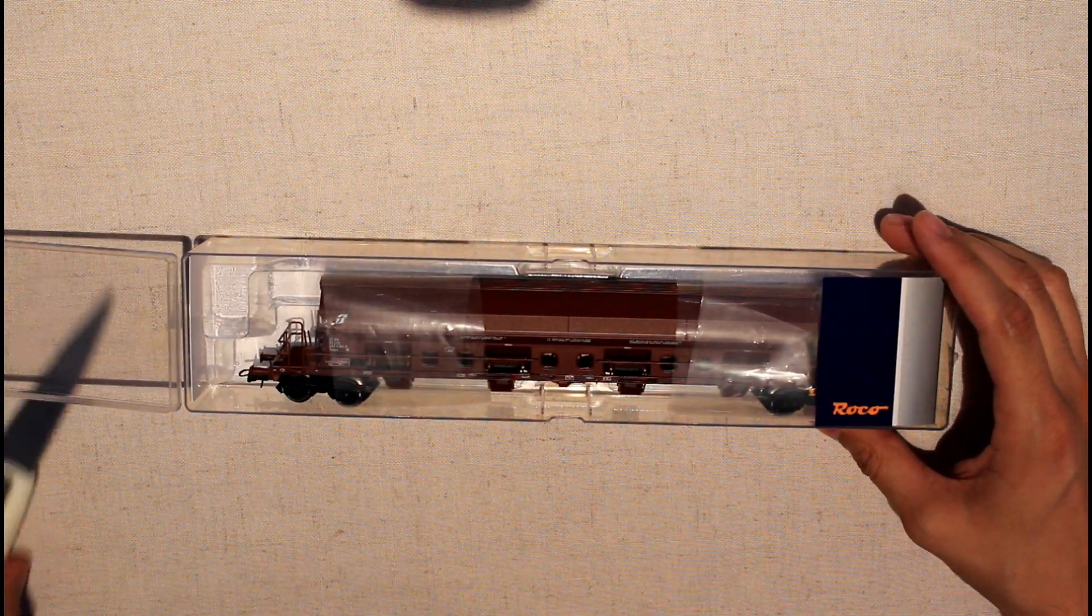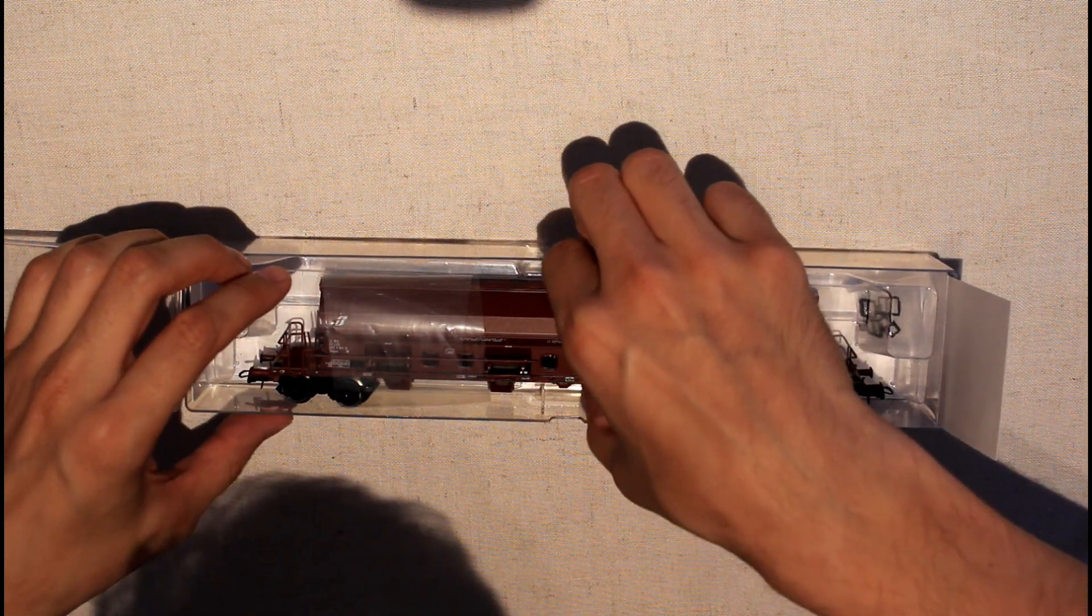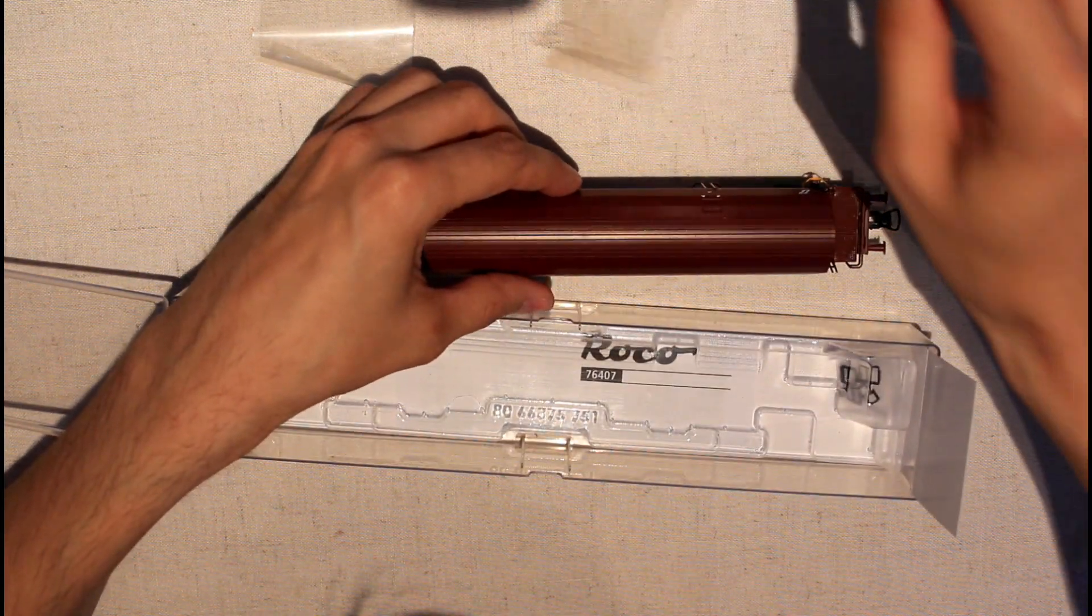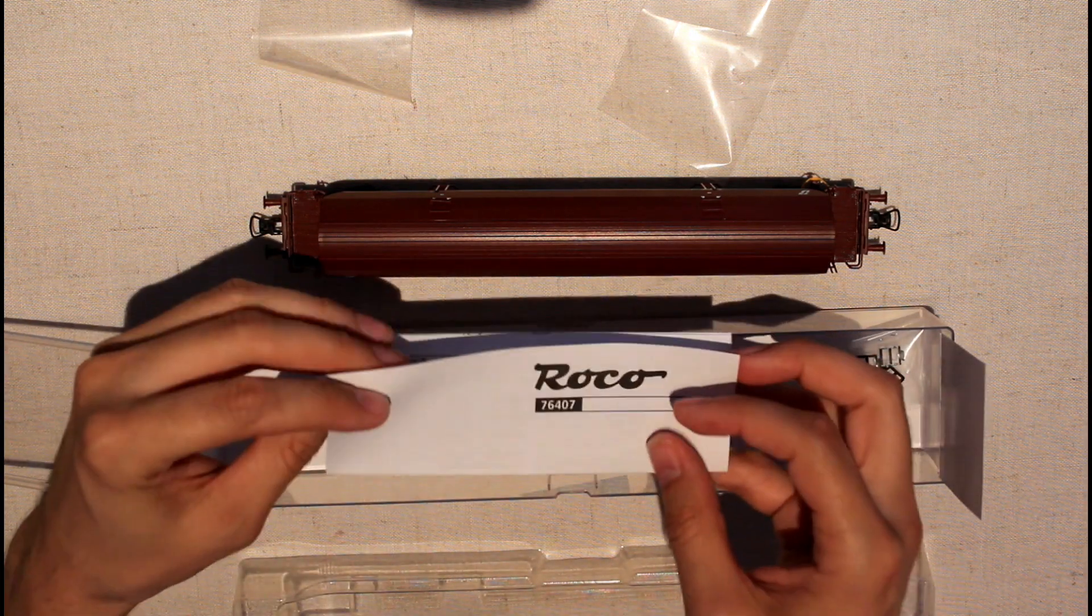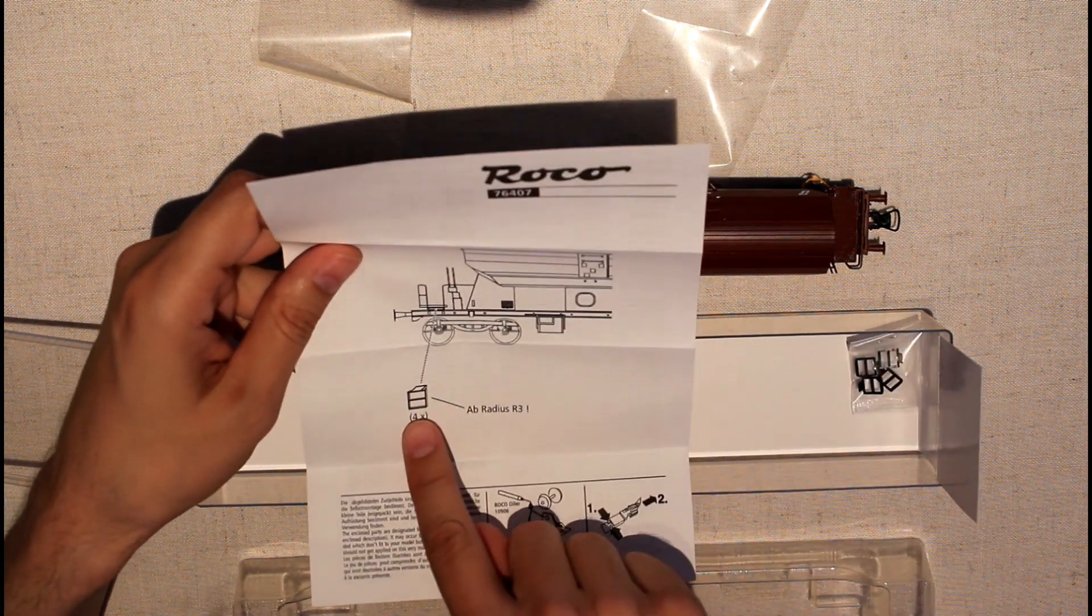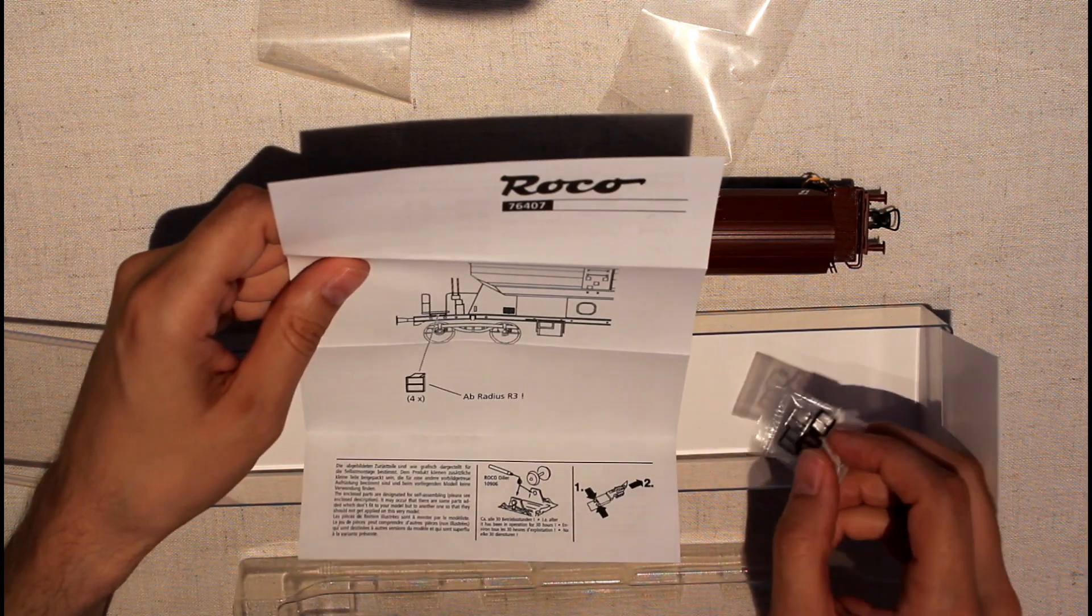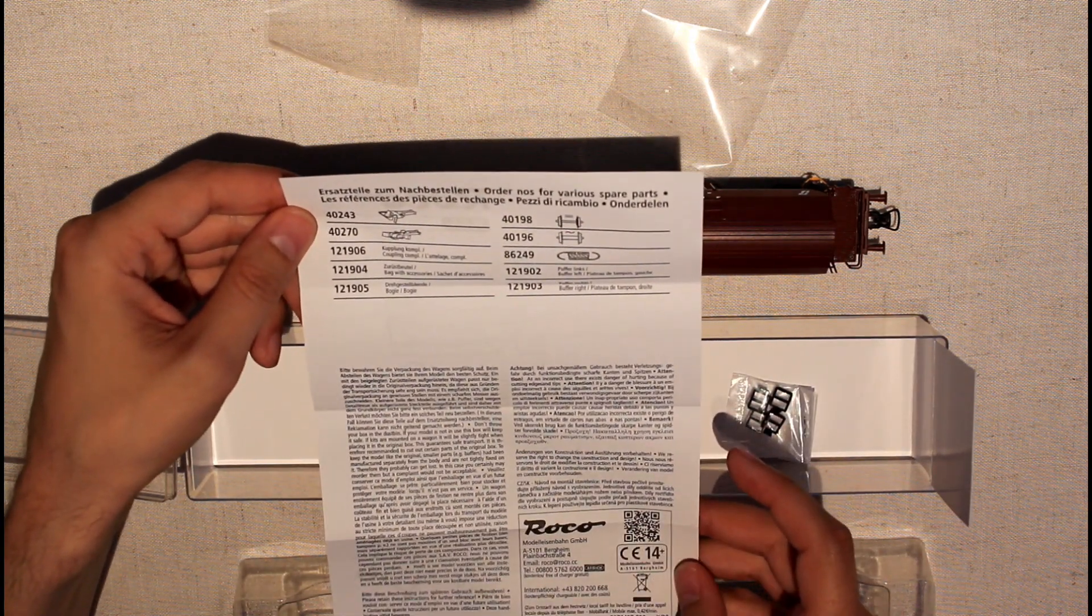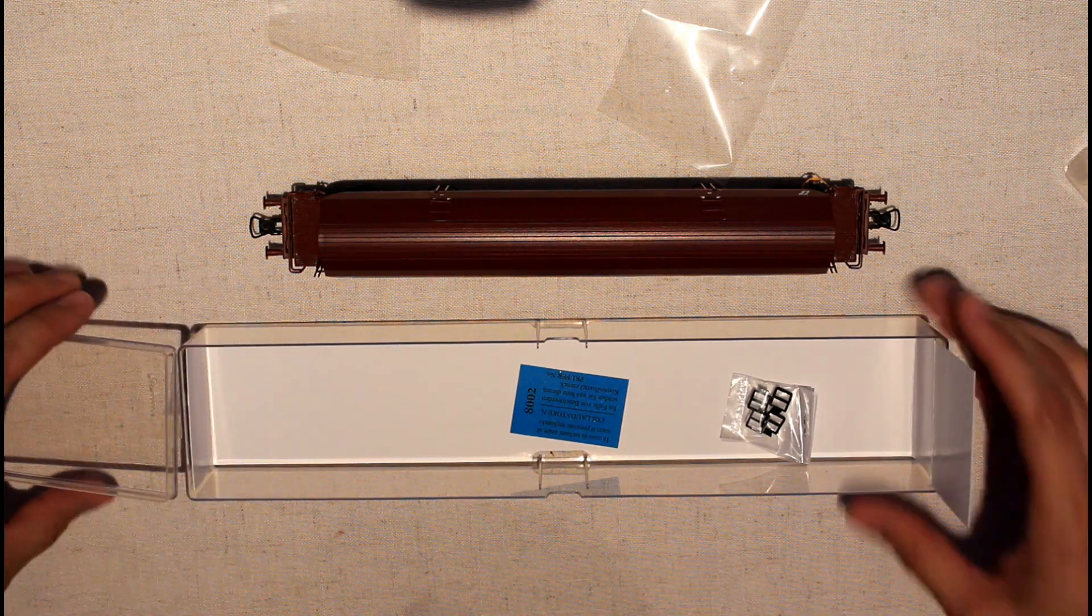I like how everything is nicely packed inside the box. If we take the wagon out, there's some protection still here. We have the rules inside with a short description. We have additional parts: the stairs, the ladder, and some maintenance instructions.